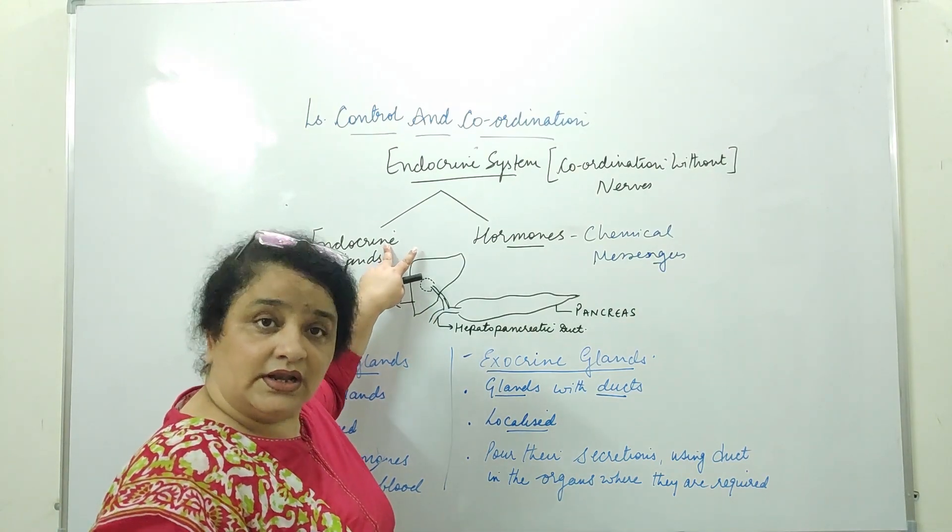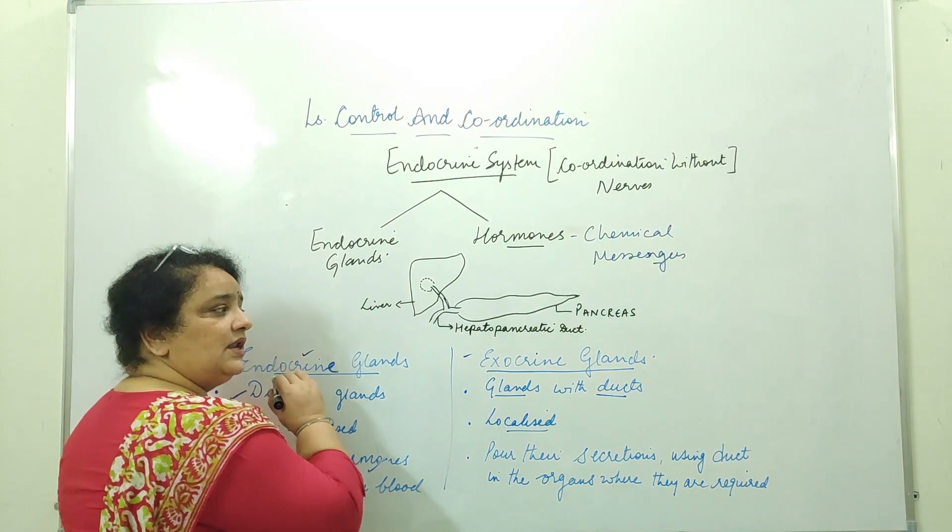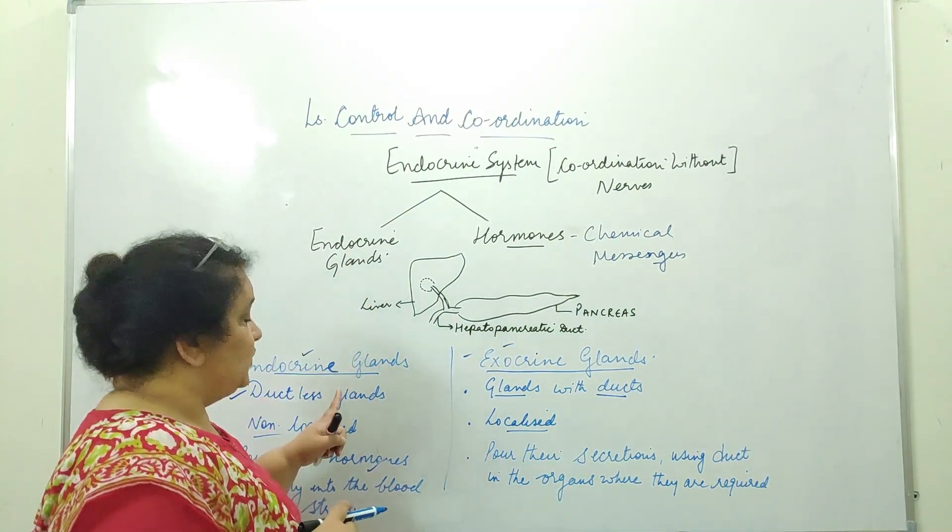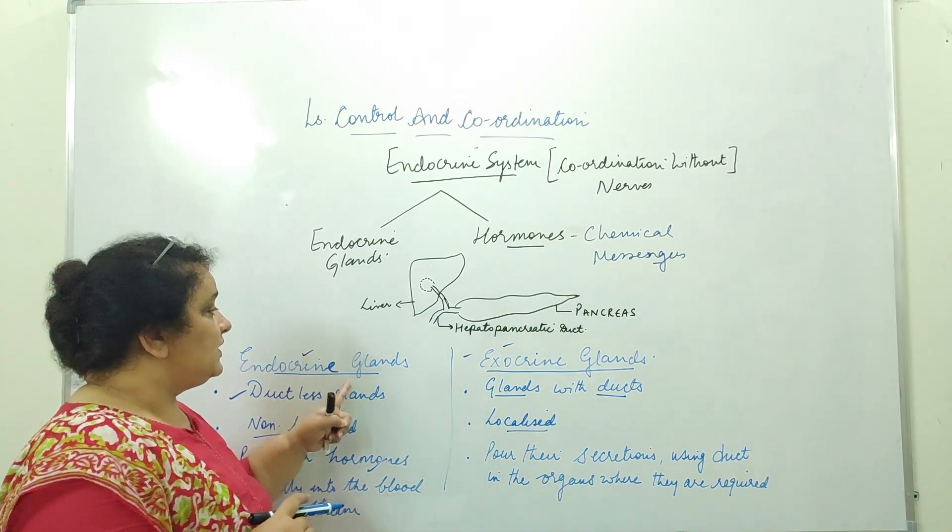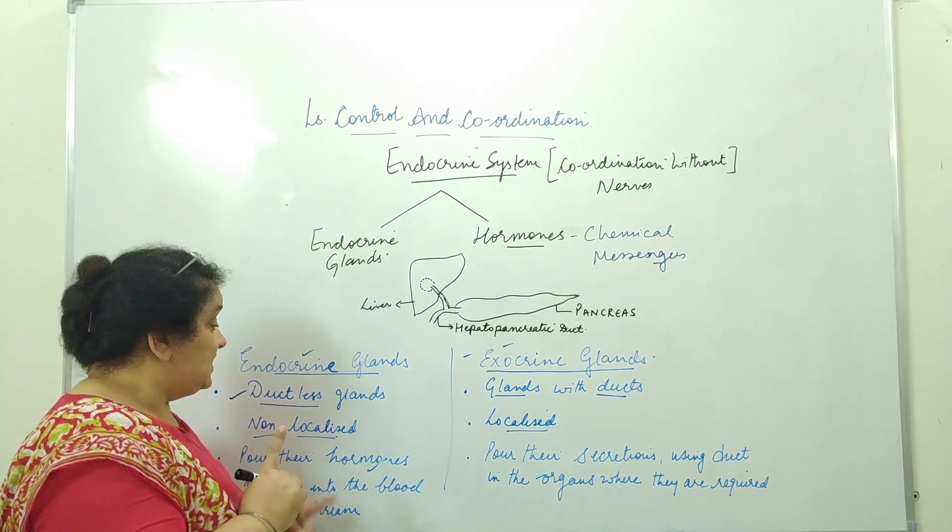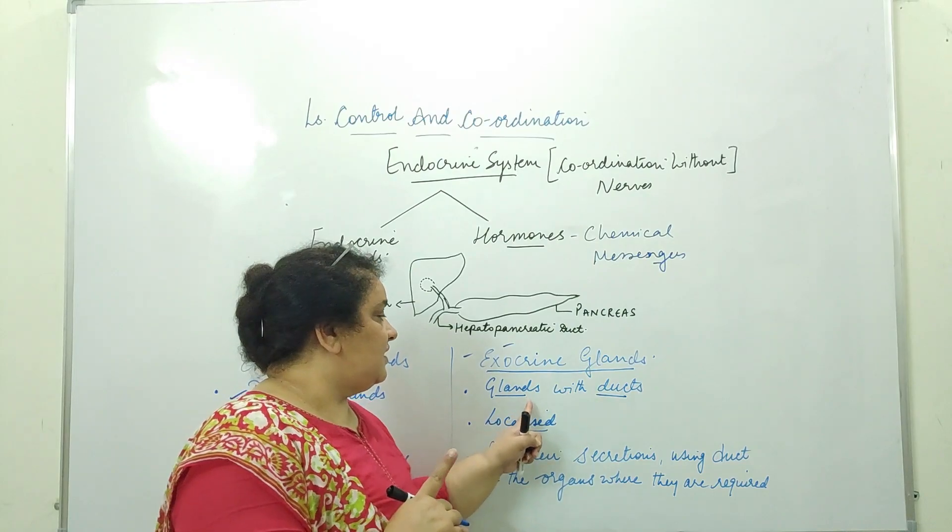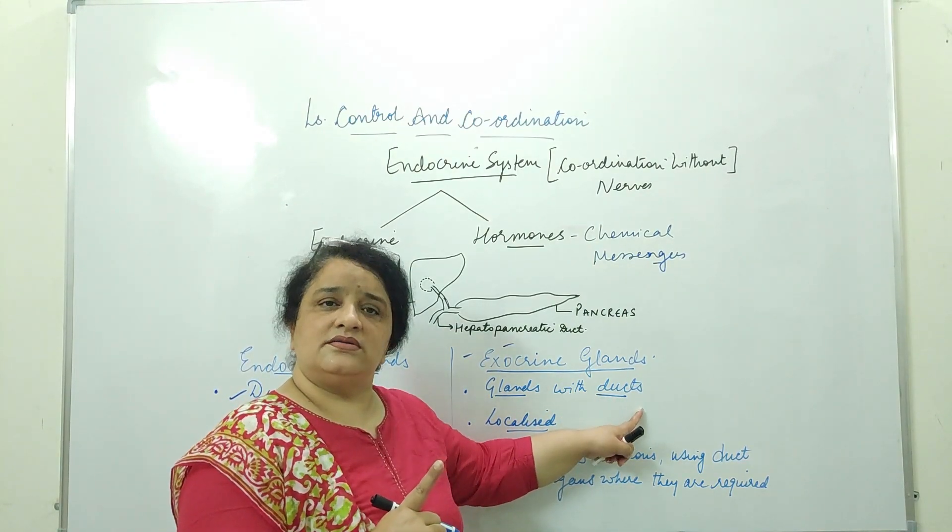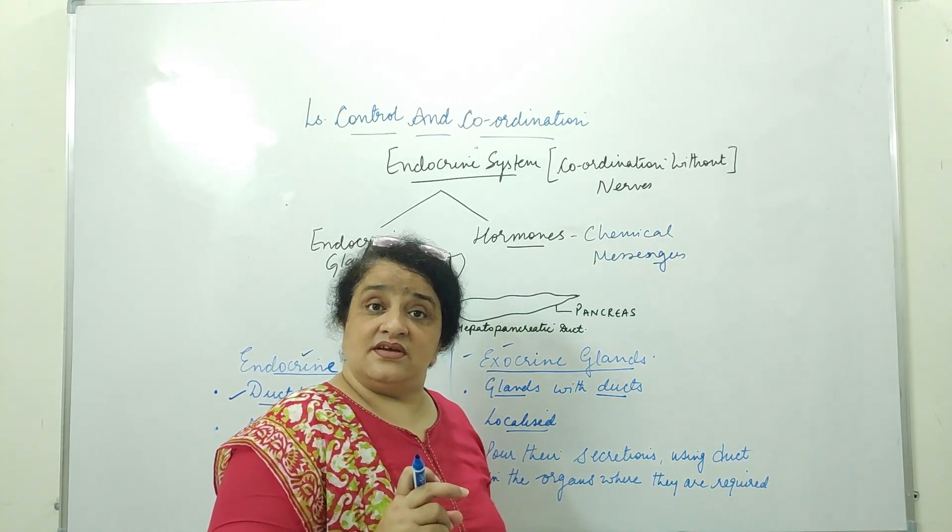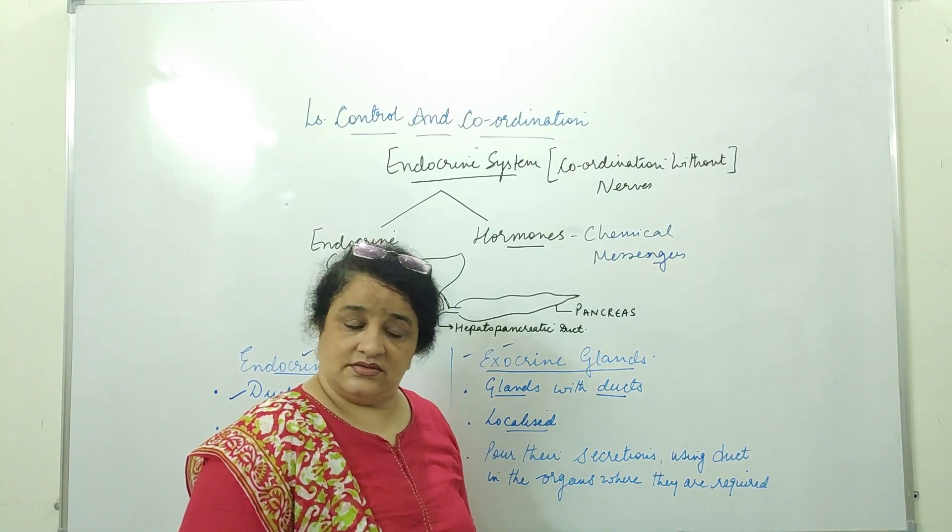Now to understand the endocrine glands we must know the difference between endocrine glands and exocrine glands. Let us start with endocrine glands. These endocrine glands are ductless glands, keep noting the key words. They are the ductless glands and the exocrine glands are the glands with ducts. Now what are these ducts? Ducts are the small, very small, minute pipe-like structures which help these glands in holding their secretions.